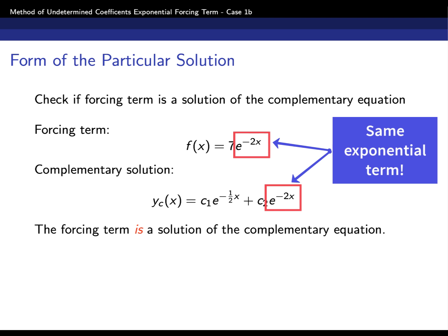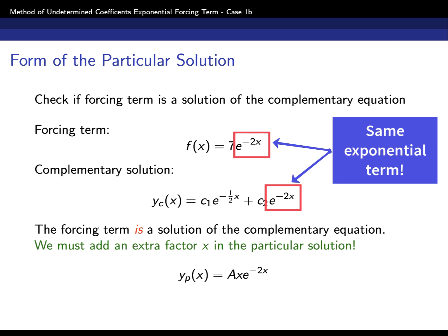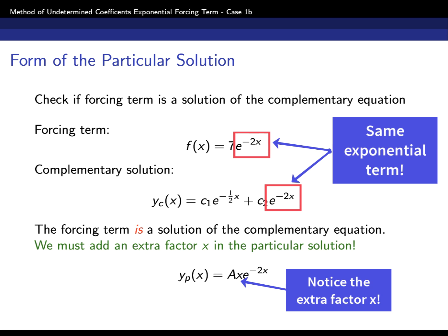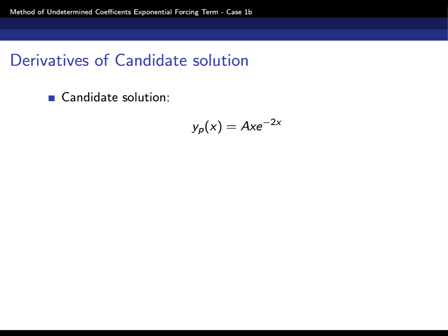When this happens — when the forcing term is an example of a complementary solution — normally the candidate solution has exactly the same form as the forcing term. But in this special case, you must add an extra factor of x. This is a common theme in this method: whenever the forcing term is a solution of the complementary equation, we add an extra factor of x in the candidate solution. So the candidate particular solution is yp(x) = A·x·e^(-2x).